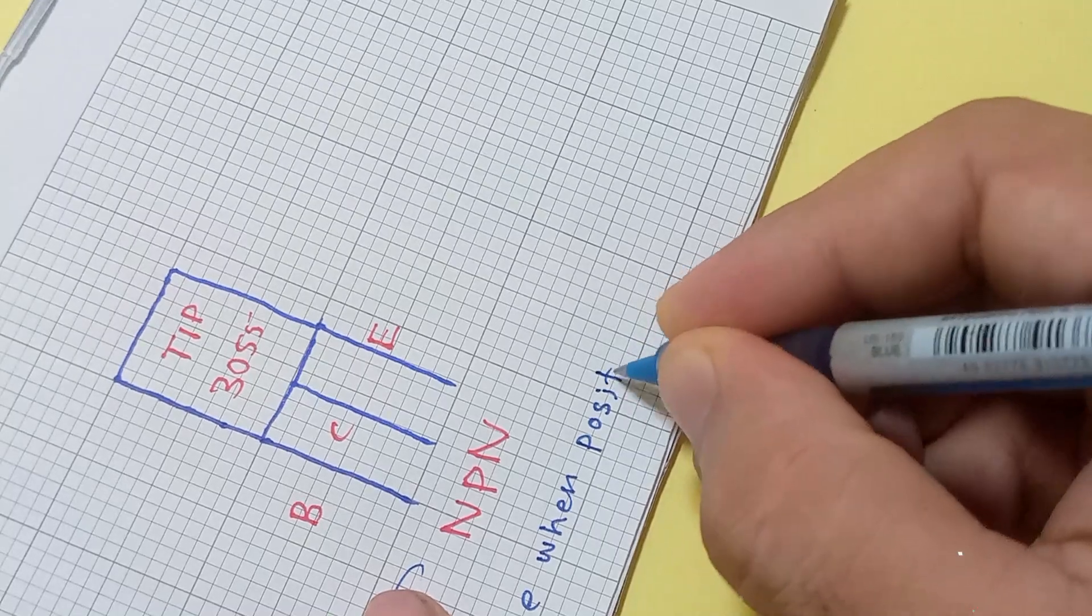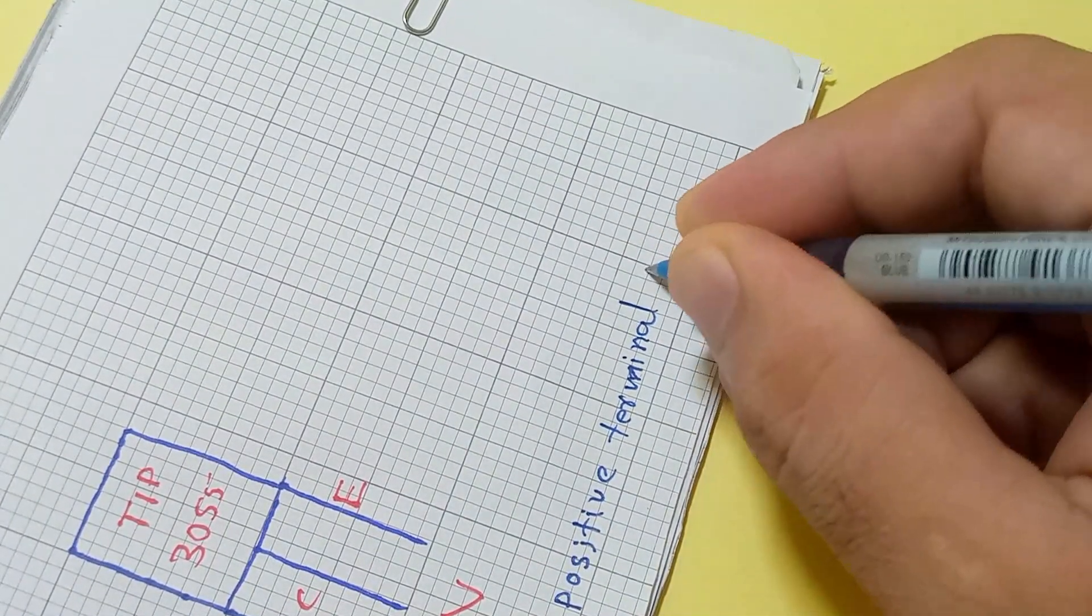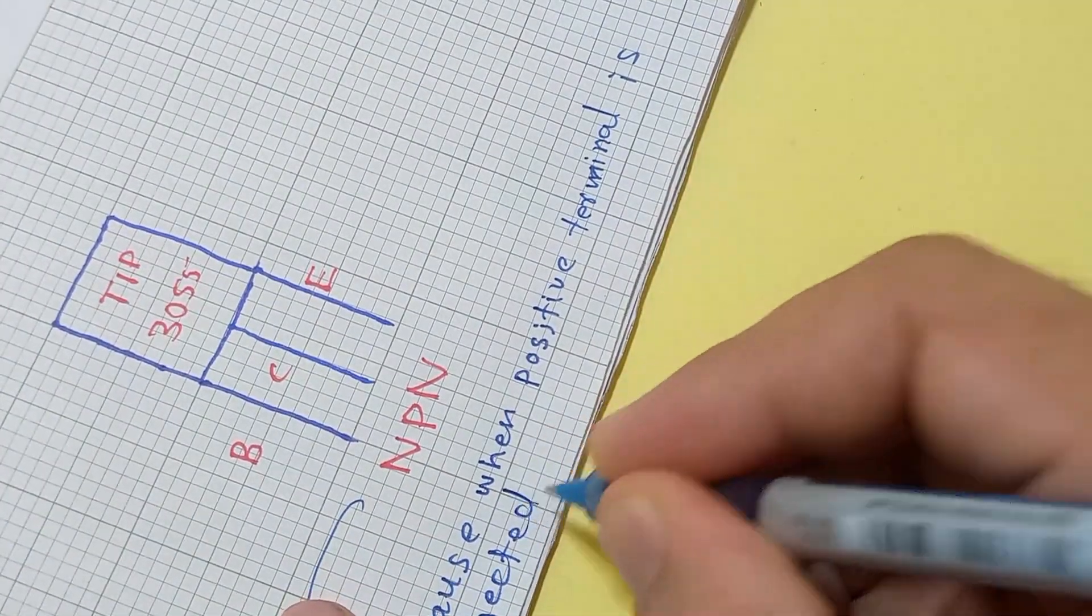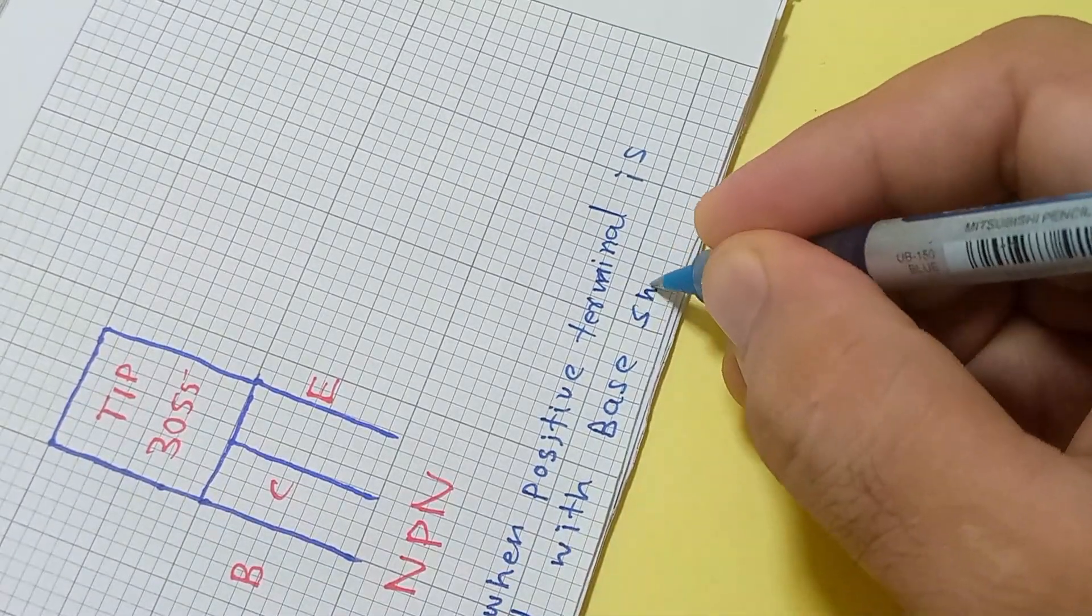Because it shows a reading only when the positive terminal of multimeter is connected with its base. In simple words, we can say that it works only when its emitter is connected with the negative source.